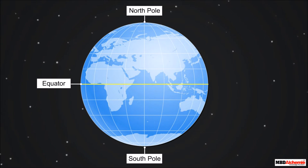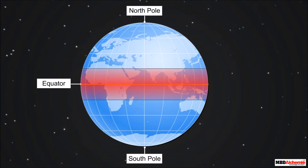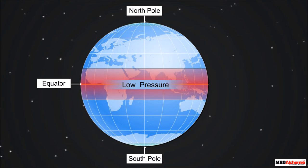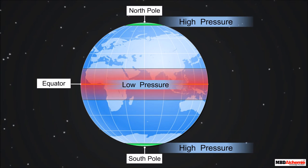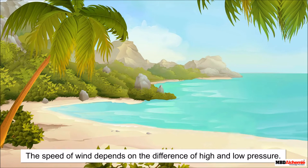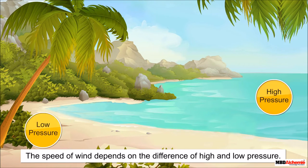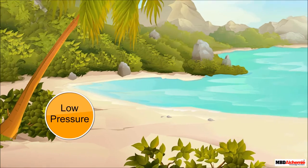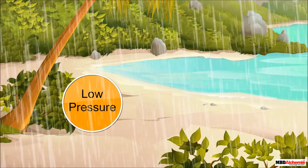The temperature controls the pressure and wind systems of any place. As we know that the equatorial region remains hot, thus the pressure of this region is always low. The hot air goes up and thus the pressure falls. On the other hand polar regions always have high pressure due to low temperature. The speed of wind depends on the difference of high and low pressure. Wind always blows from a high pressure area to a low pressure area. Thus if wind comes from water body to a landmass it brings moisture and helps in rainfall.